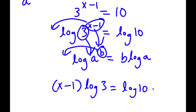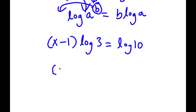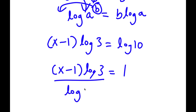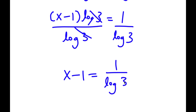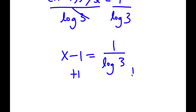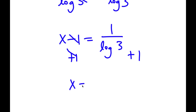Now, log 10 is the same thing as 1. So I have x minus 1 times log 3 is equal to 1. If I divide both sides by log 3, I get x minus 1 is equal to 1 over log 3. Then if I add 1 on both sides, I'm left with x is equal to 1 over log 3 plus 1.